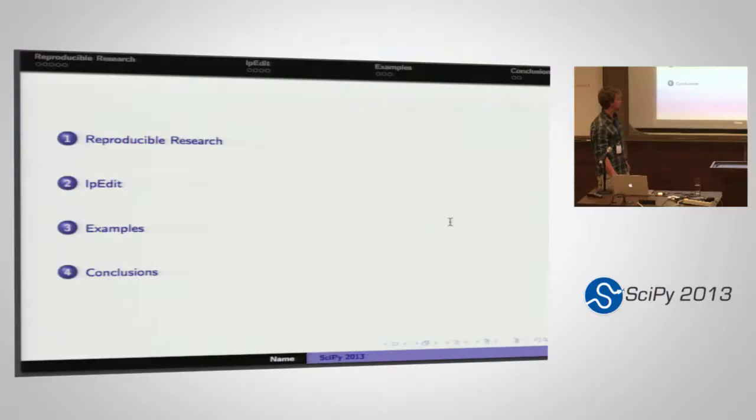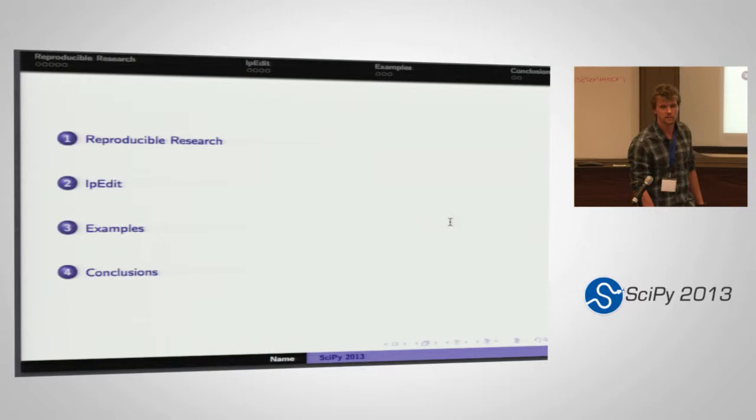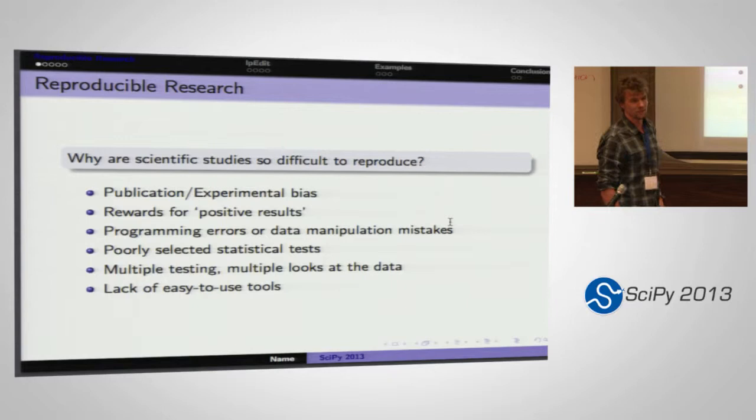I'm going to talk a little about reproducible research in general and some of the motivations behind why we really need to improve the way many of us do science. Then I'll talk about the software I've created, with a couple of examples, some different analyses we can do with it, different capabilities, and then some future improvements and future directions — because there really is a lot of work that still needs to be done.